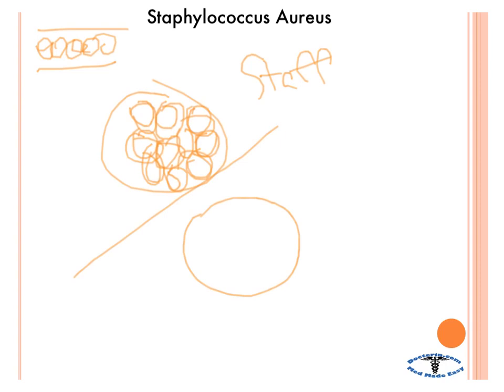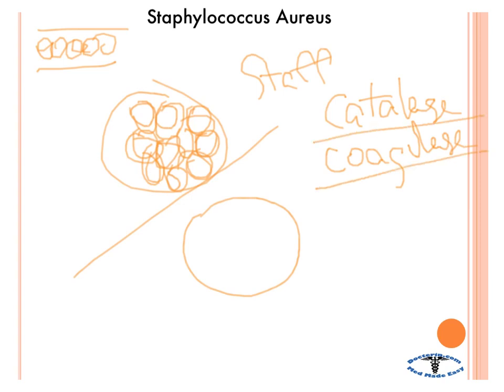Some other things that are very important to know is that Staph aureus is both catalase and coagulase positive. It's a well-known organism and it has everything you can think of — catalase and coagulase, of course.